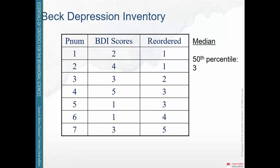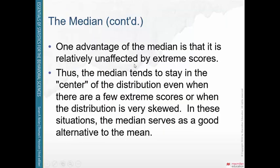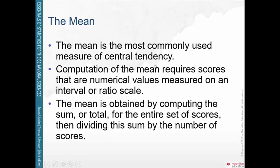Now let's get to the mean, which is the most commonly used measure of central tendency. In order to compute the mean, you must have scores that are on an interval or ratio scale — actual real numbers, not ordinal place values like first, second, or third place. You add up all the scores and divide by the total number of scores. The formula is the sum of X divided by N, where X represents all your scores and N is your total number of scores.